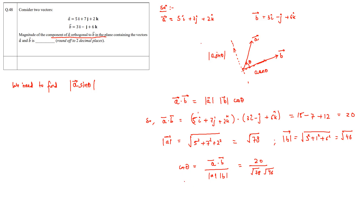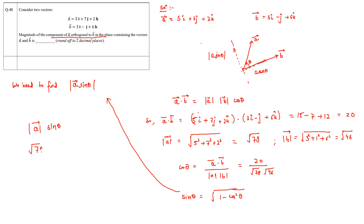Once we know cosθ, we can calculate sinθ = √(1 − cos²θ). The component of a orthogonal to b has magnitude |a|·sinθ, where |a| = √78 and sinθ = √(1 − (20 / (√78 × √46))²). Solving this gives the final answer of 8.32.